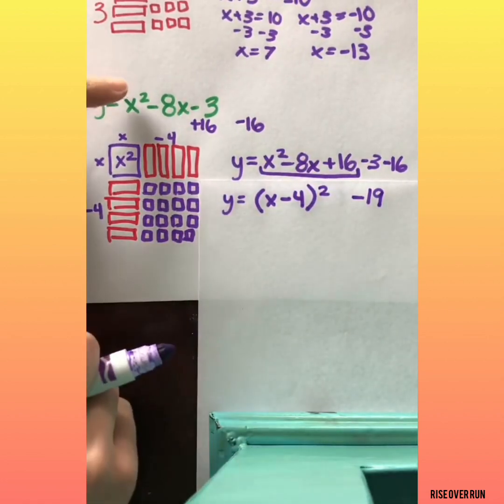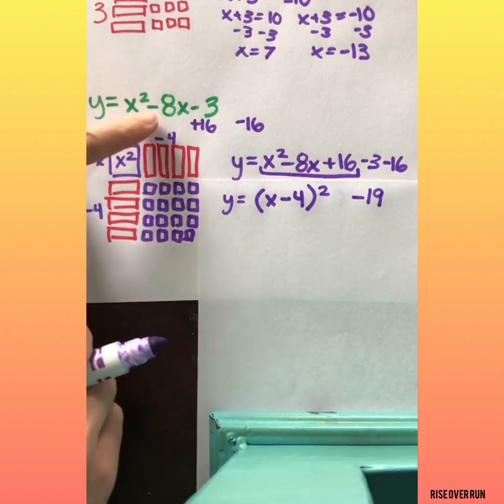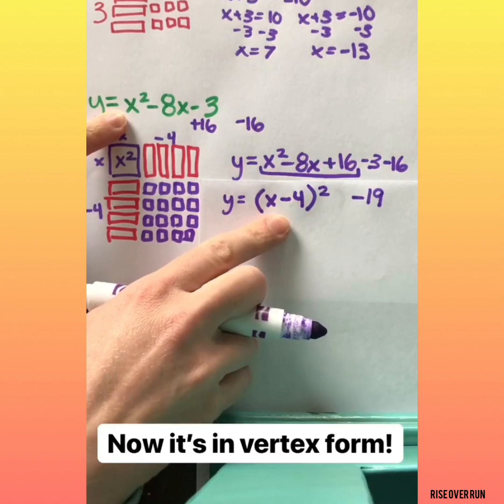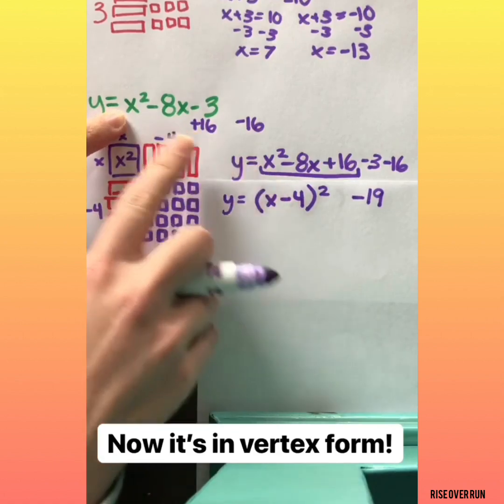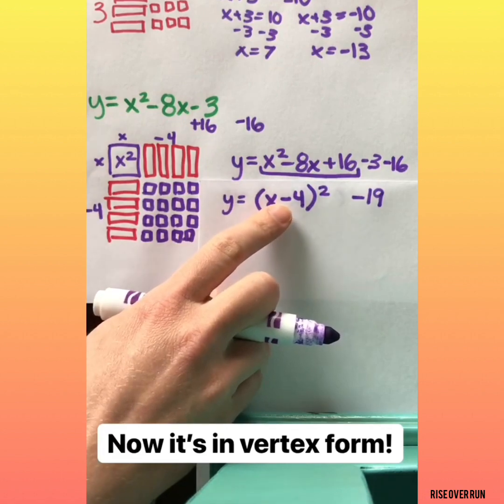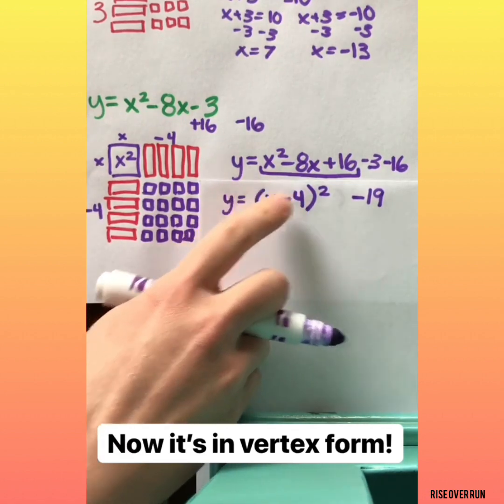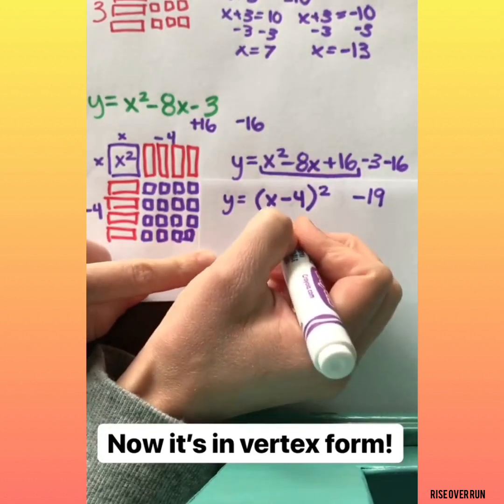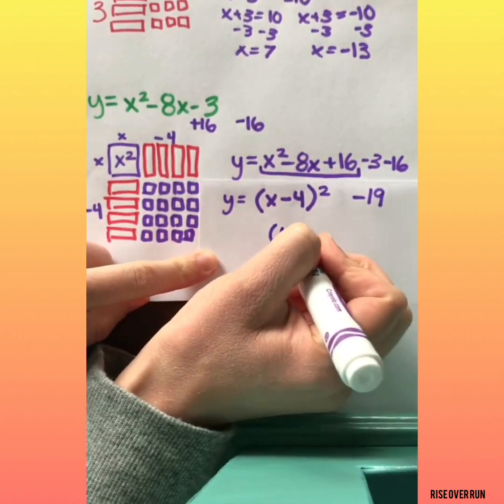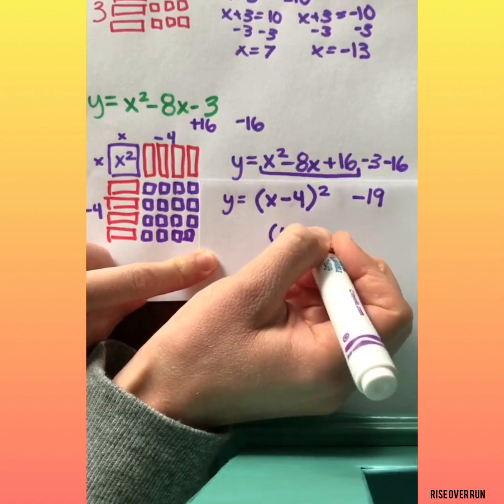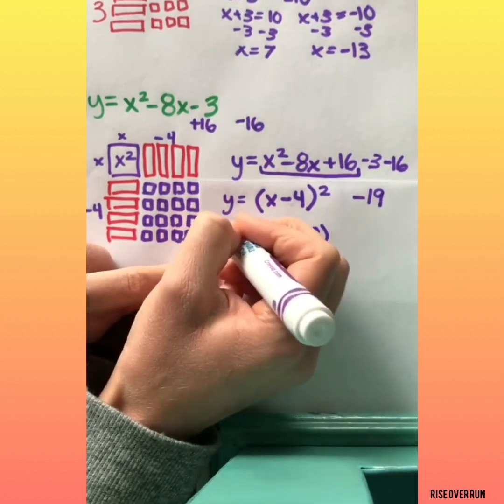So this first portion here, this perfect square trinomial, I'm going to rewrite as these factors. x minus 4 times x minus 4 or just squared. I still have the minus 3 and the minus 16. I can go ahead and put those together as minus 19. The nice thing about using complete the square is that I can change this standard form equation into vertex form. Now I can easily spot my vertex remembering what we did previously. Remember that inside the parentheses that minus 4 means that your vertex moves over to positive 4 and that minus 19 moves it down 19. So that's your vertex.